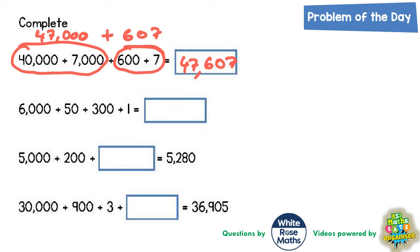For the next one, look at what we can join together easily. We can join these three together: 300 plus 50 plus 1. It's not always about joining them in order. 300 plus 50 plus 1 equals 351. Then we've got 6,000, so 6,000 plus 351 equals 6,351.